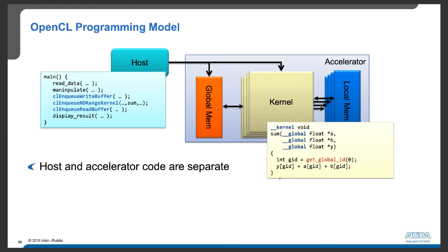We want to show you an OpenCL programming model using an example where we have code on the host side and a kernel function on the device side. There are two main hardware domains in the OpenCL framework: host and accelerator (or device). Programs running on the host side prepare the devices and kernels, and create commands to be submitted to those devices.